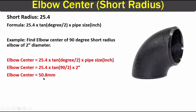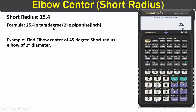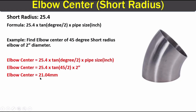Now let's solve another case of a short radius elbow. We have a short radius elbow of 45 degrees and 2 inch diameter. Applying the same formula: 25.4 multiplied by 10, into 45 divided by 2, multiplied by 2 inches. We get an answer of 21.04 millimeters as the elbow center.